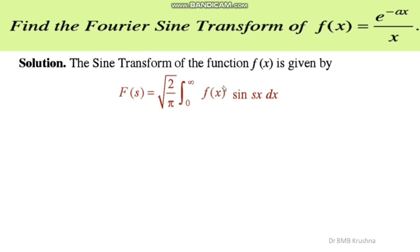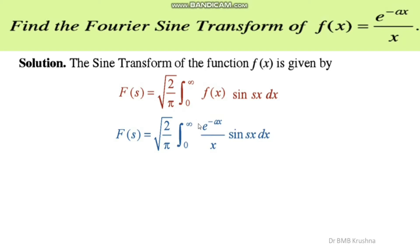The function f(x) is replaced with e^(-ax)/x. The integrand is in the form p/q, that is e^(-ax)/x · sin(sx). The anti-derivative of this integrand does not exist, so we need to find the Fourier sine transform F(s) by deriving a first-order ordinary differential equation with an initial condition.